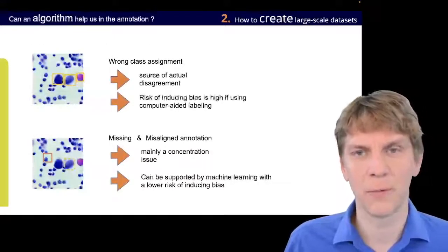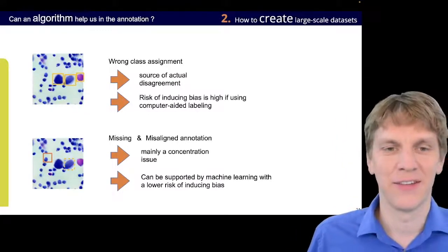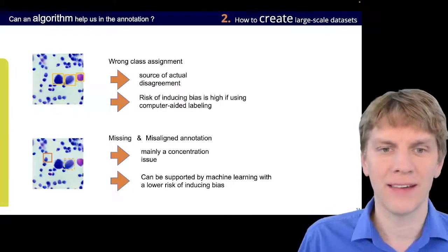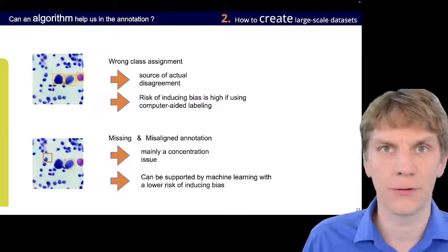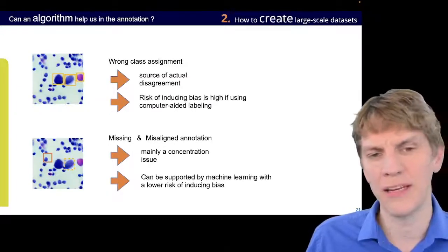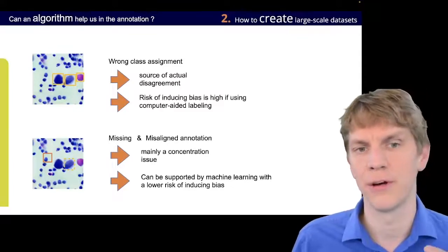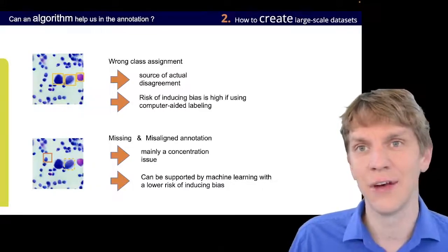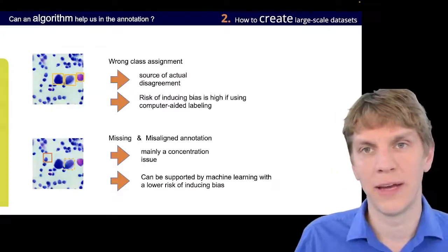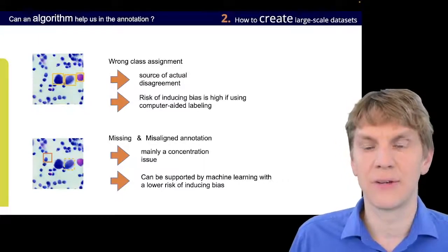So, first things first. So, the wrong class assignment is, well, of course, a source of actual disagreement. And if we have some cells that are really a little bit more ambiguous, then we will naturally have such a kind of disagreement there. And this is really a case where we need multiple raters in order to reduce the error to a level that is okay. And then we have the missing and misaligned annotations. And this is actually mainly a concentration issue from my point of view.